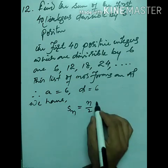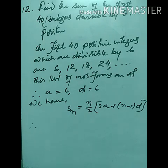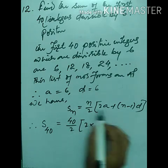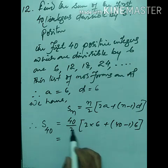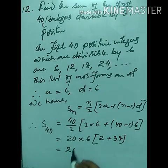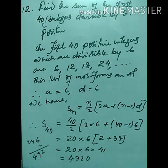Using Sₙ = n/2 × [2a + (n−1)d], we find S₄₀ = 40/2 × [2×6 + (40−1)×6] = 20 × [12 + 39×6] = 20 × 6 × [2 + 39] = 20 × 6 × 41 = 4920. The sum of the first 40 positive integers divisible by 6 is 4920.